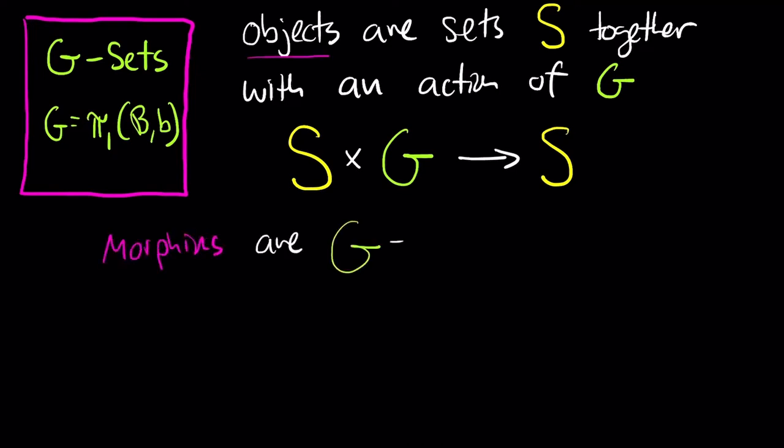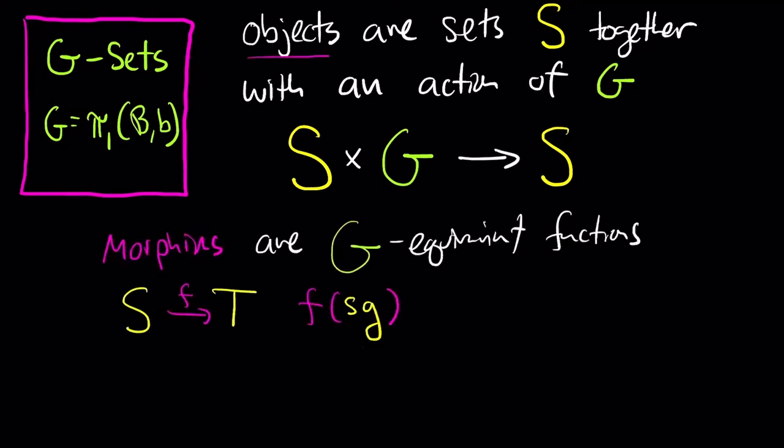What are morphisms between G-sets? A morphism from a G-set S to a G-set T is a function from S to T that's compatible with the actions, and I've written here what that means.